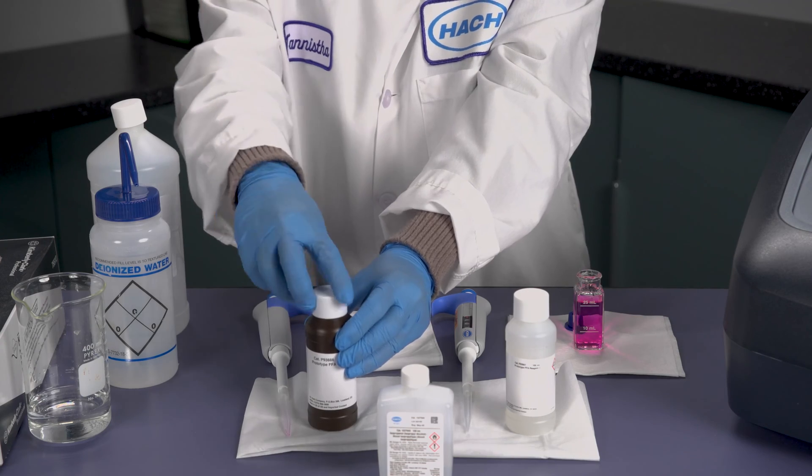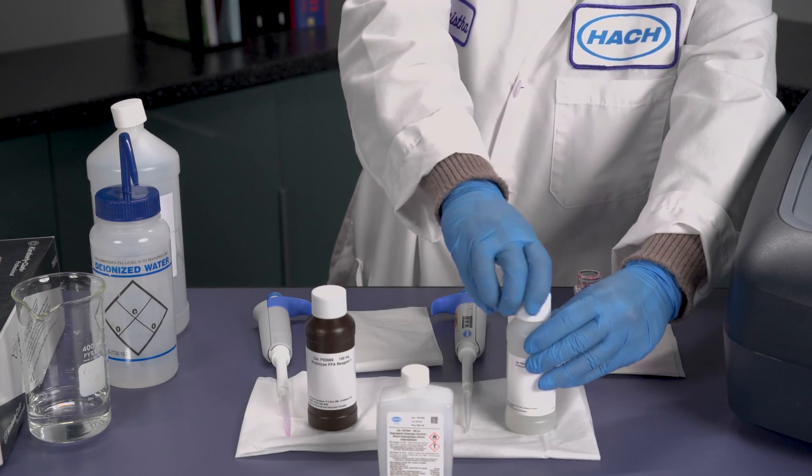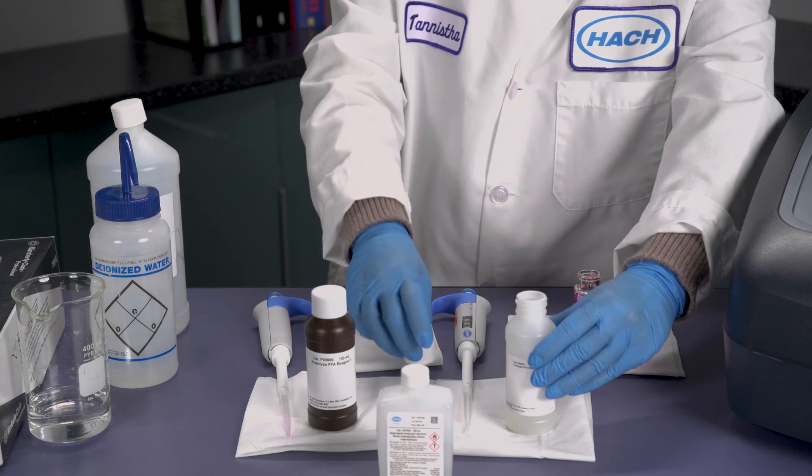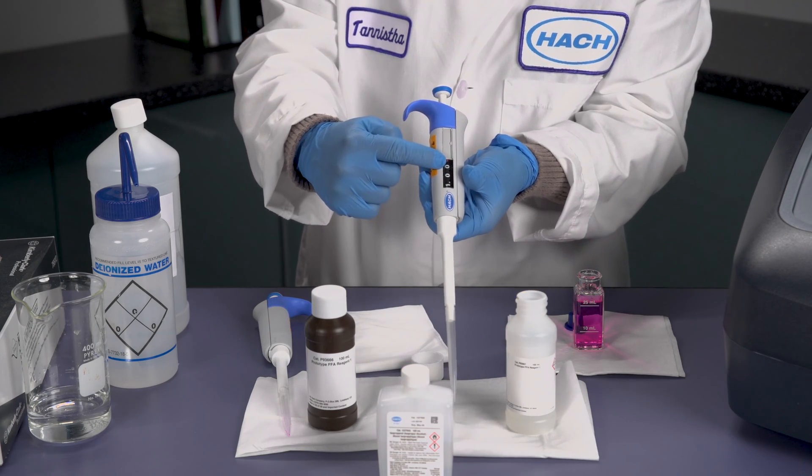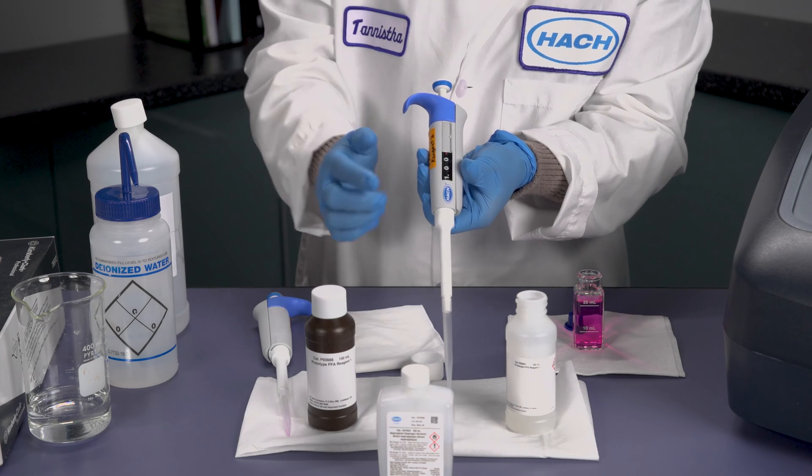Next, we're going to add film forming amine number 2. Again, it's very important to use separate pipettes for this method. Set this at 1 ml as well.